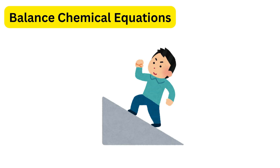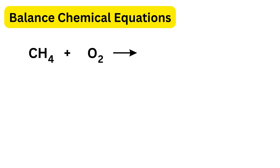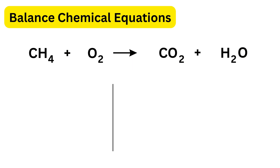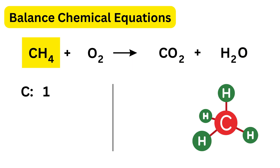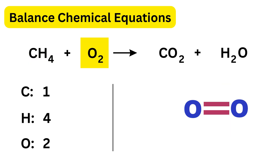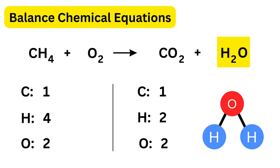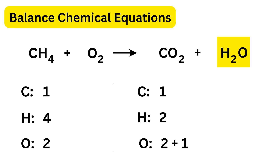Now our third problem: methane reacts with oxygen to form carbon dioxide and water. This is the unbalanced equation. On the left we have one carbon, four hydrogens, and two oxygens. On the right, CO₂ has one carbon and two oxygens; H₂O has two hydrogens and one oxygen — so the right side totals one carbon, two hydrogens, and three oxygens. Carbon is already balanced.